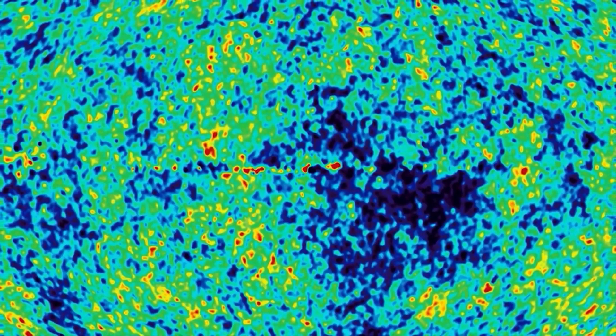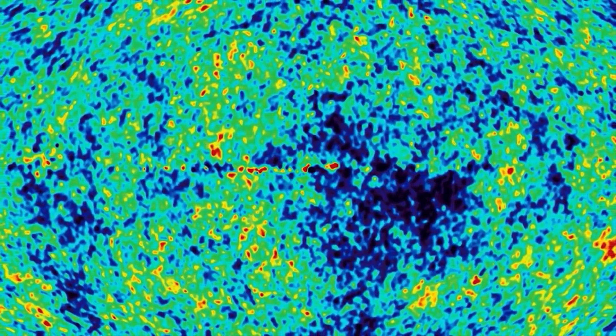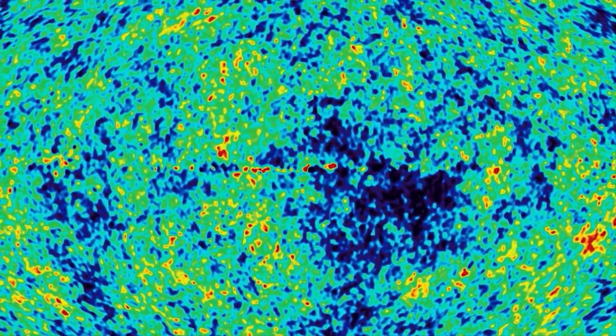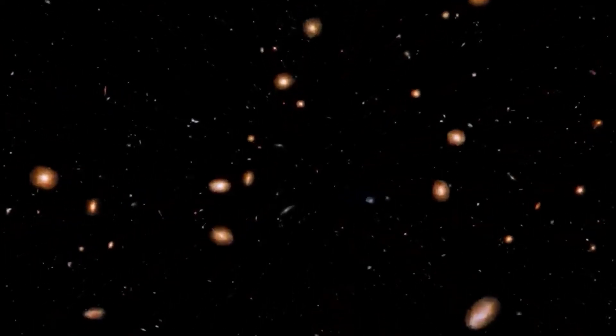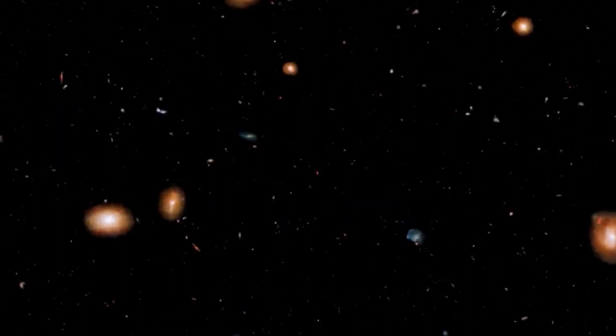Stellar remnants such as white dwarfs and neutron stars are also thought to contain high amounts of dark matter, and so are the so-called brown dwarfs, failed stars that didn't accumulate enough material to kick-start nuclear fusion in their cores.